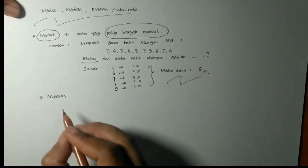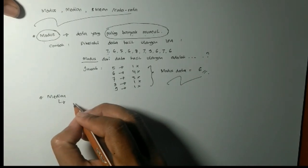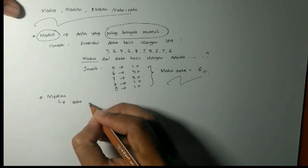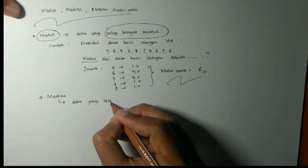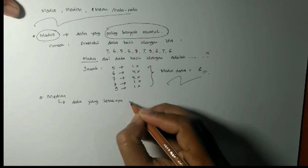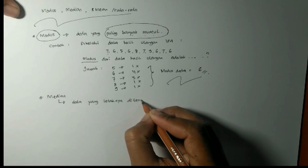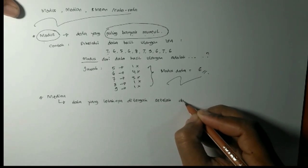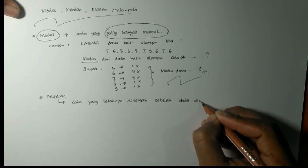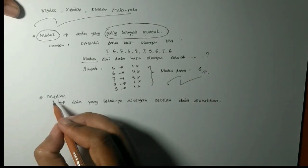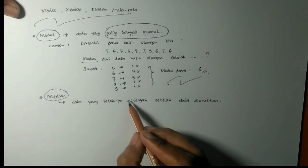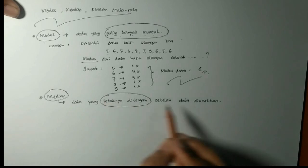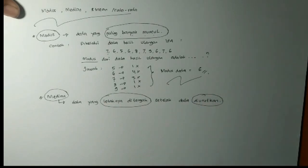Oke, yang kedua median. Kalau modus itu data yang paling banyak muncul, median itu data yang terletak di tengah setelah data diurutkan. Jadi kalau median itu kata kuncinya data yang letaknya di tengah ya. Tapi jangan lupa harus diurutkan terlebih dahulu.